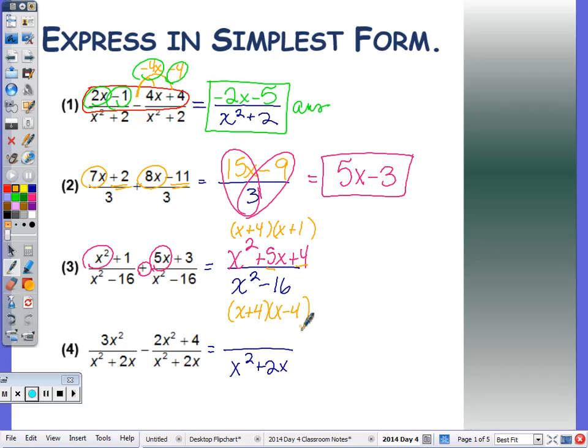x plus 4 times x minus 4. Canceling common factors of x plus 4, my final answer is x plus 1 over x minus 4.